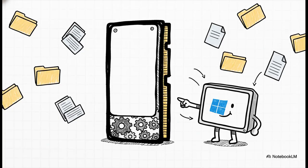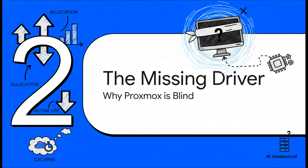There's another major player in this mystery. Modern operating systems — and Windows is a prime example — are basically memory hoarders, and they do it for a good reason. Their philosophy is simple: any memory that's not being used is wasted memory. So Windows will grab any free RAM it can find and fill it with cached files and data to make everything feel faster. Proxmox sees all that cache and says 'that's used,' but Windows knows it can drop that cache in a millisecond if an application actually needs the space. So we've got allocation versus active use, and we've got aggressive caching.